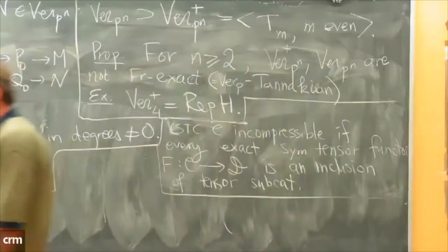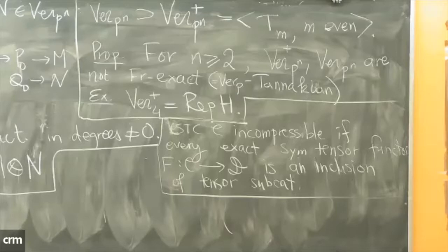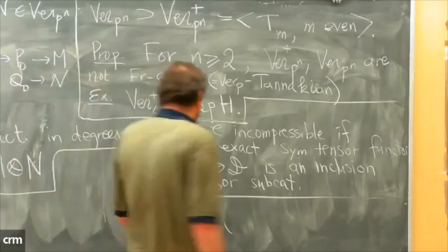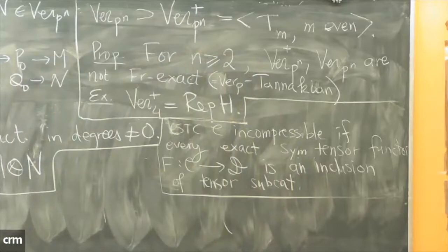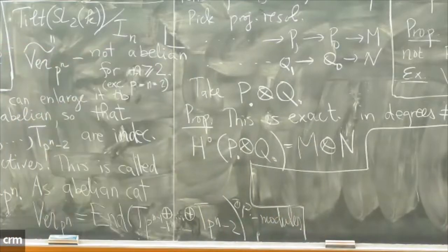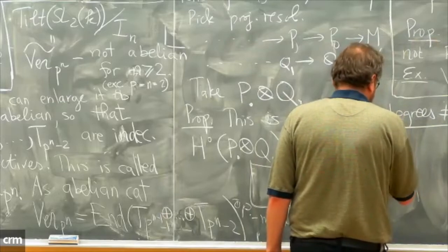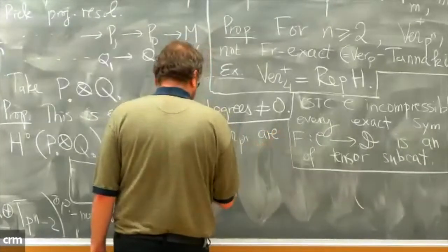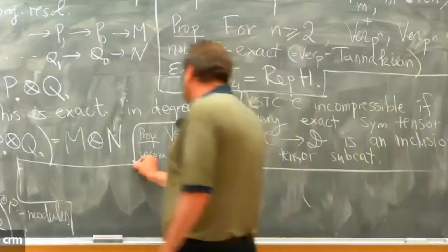Audience question: in the proposition that Ver(p^n) and Ver(p^n)+ are of moderate growth — is this the quotient by I_1? Answer: no, already the category of tilting modules itself has moderate growth — everything is bounded by vector space dimensions. For example, a constant for T_i can be taken to be the vector space dimension of T_i, which is a finite-dimensional module. So moderate growth is easy to see.